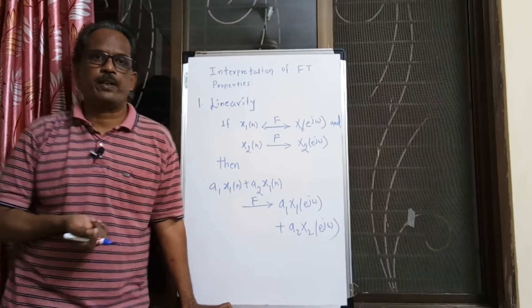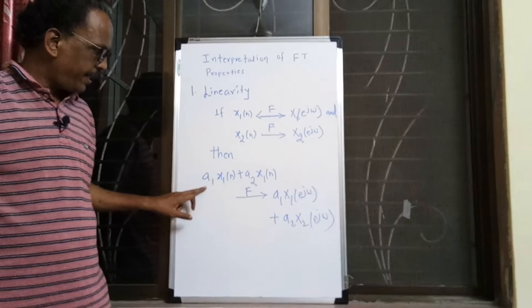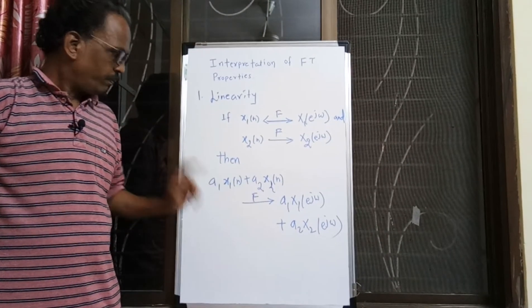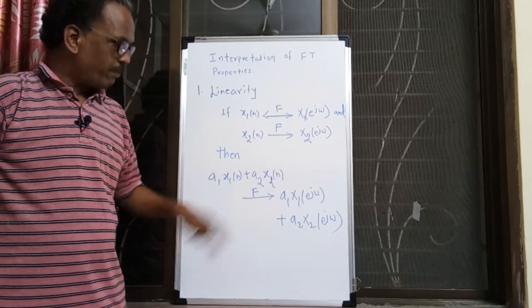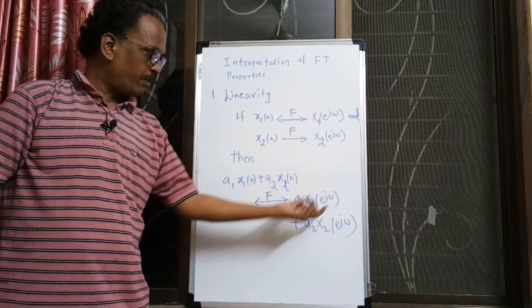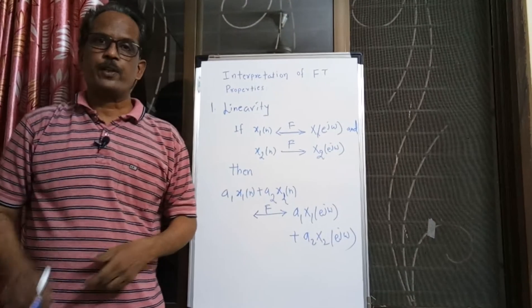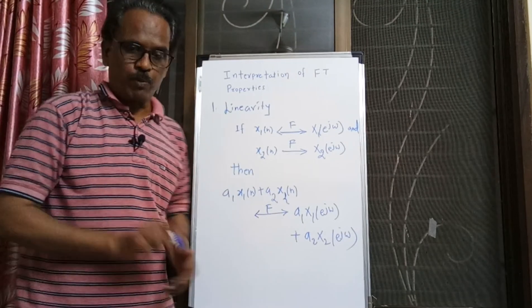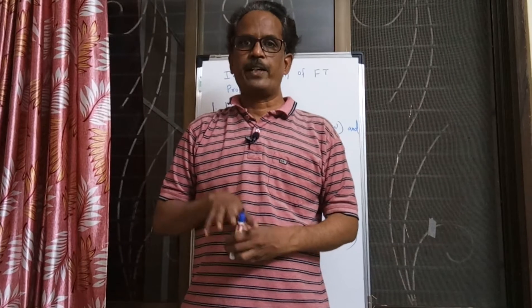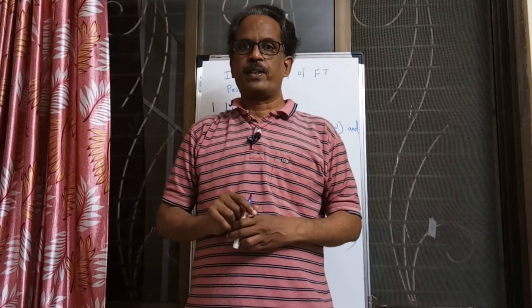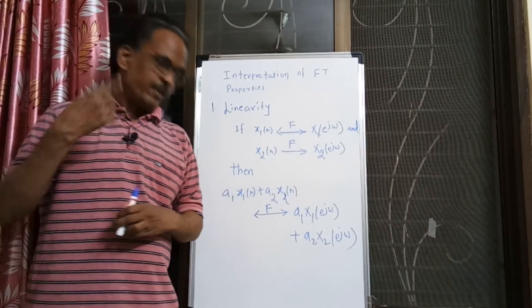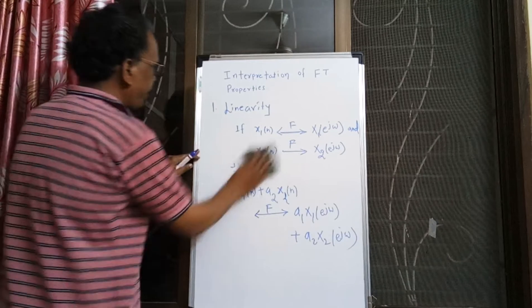If x1(n) is scaled by a1 and x2(n) is scaled by a2, then their Fourier transforms X1(ω) and X2(ω) will also be scaled by a1 and a2. This inverse is also true: if I take the inverse of a linear combination of Fourier transforms, we get a linear combination of their time domain signals. This is the linearity property of Fourier transform.